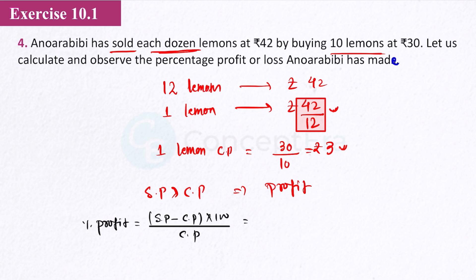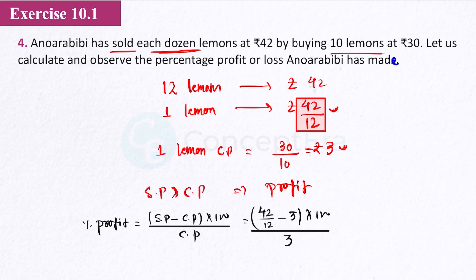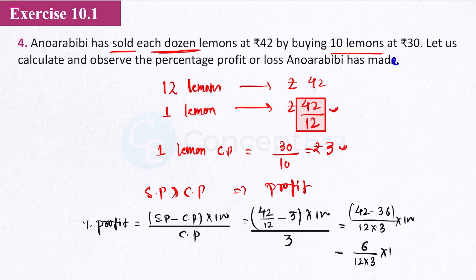Solving this gives us 50 by 3. So percentage profit is 50/3 percent. There is a profit and this percentage profit is 50/3.